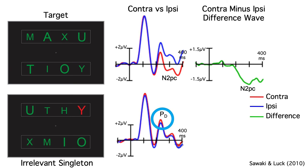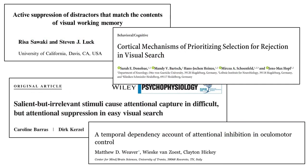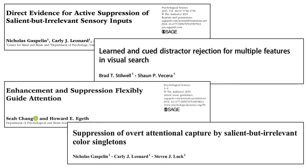But then Risa ran a follow-up study and found exactly the same effect. Several papers have now been published showing that singletons elicit a PD rather than an N2PC, and this finding led to behavioral studies providing converging evidence that singletons are actively suppressed under many conditions.